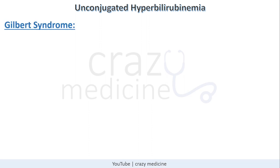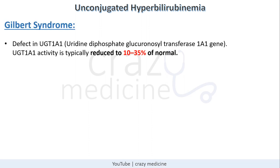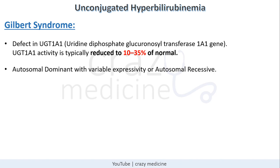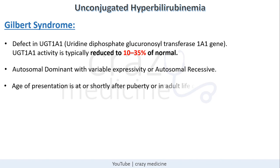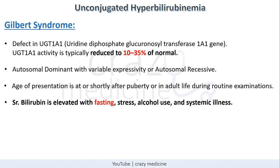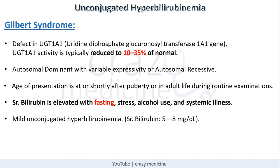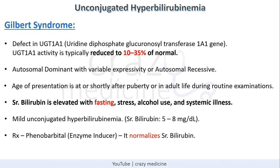Now coming to Gilbert syndrome. This is also associated with defect in UGT1A1, but the enzyme is reduced to only 10–35% of normal. This disease can be autosomal dominant or autosomal recessive, and the usual age of presentation is at or after puberty or in adult life during routine examination. The characteristic feature is that serum bilirubin is elevated with fasting, stress, alcohol use, and other systemic illnesses. The patient has mild unconjugated hyperbilirubinemia with serum bilirubin fluctuating around 5–8 mg/dL. Treatment is phenobarbital, and importantly, it normalizes serum bilirubin — in contrast to Crigler-Najjar Type 2 where bilirubin does not normalize.